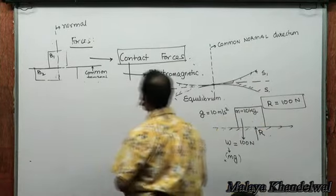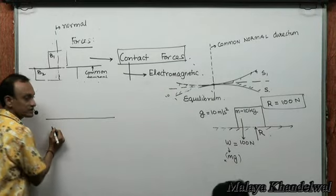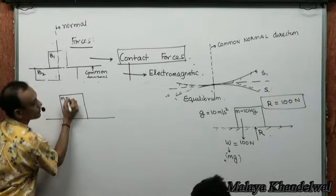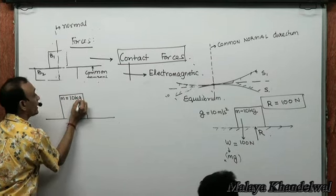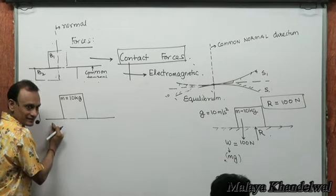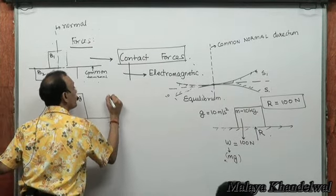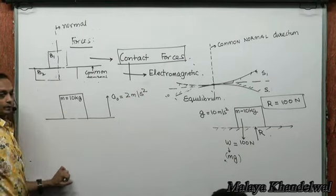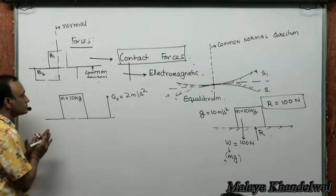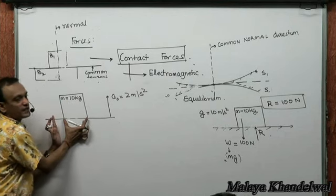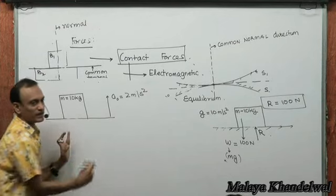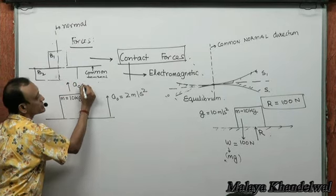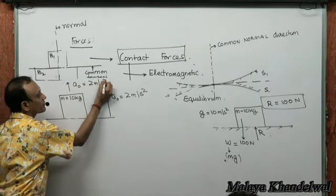Consider a mass of 10 kg on the surface of an elevator moving upward with an acceleration A₀ = 2 m/s². The mass maintains contact with the elevator and so also has an upward acceleration of 2 m/s². Forces on the mass: 100 newtons downwards from gravity, and normal reaction R upwards from the elevator floor.